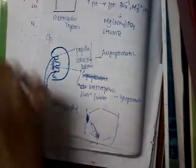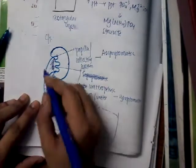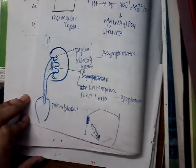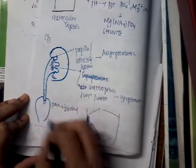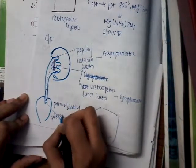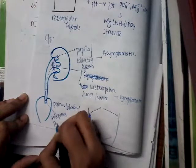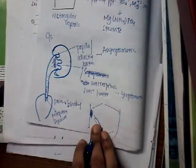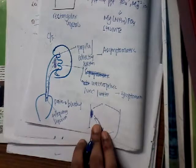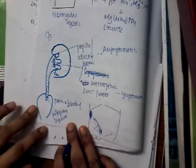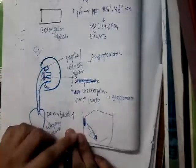If it is female, the pain may also occur in the vulva. Whenever the stone is in the intramural ureteric portion near the bladder, it can cause symptoms like frequency or dysuria.